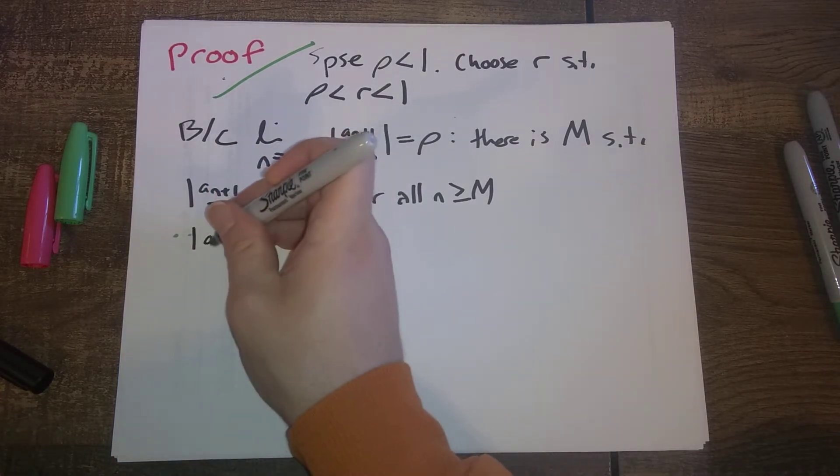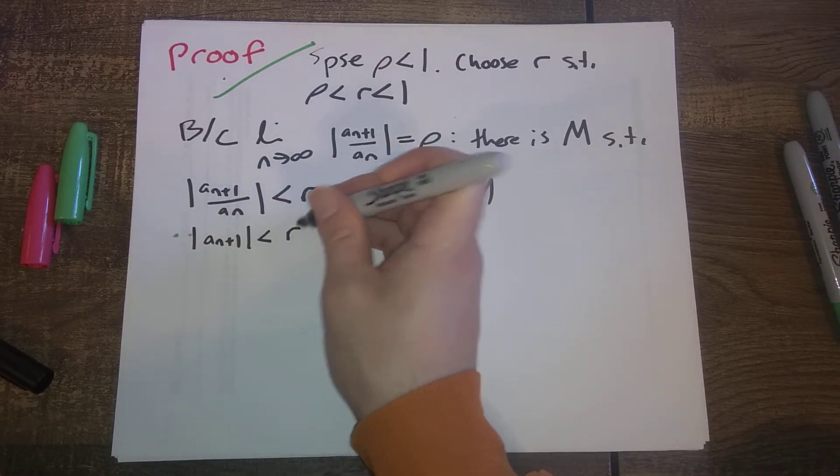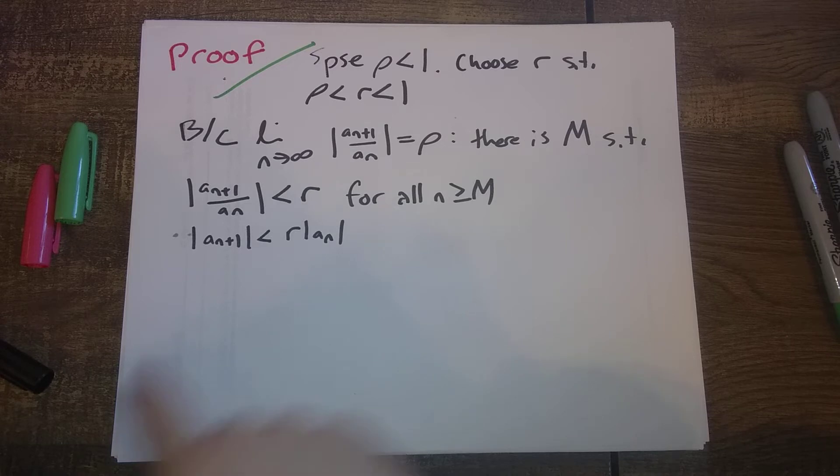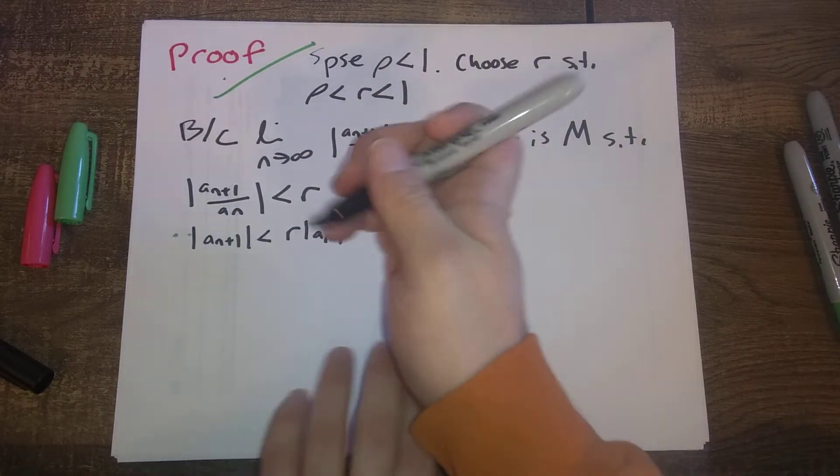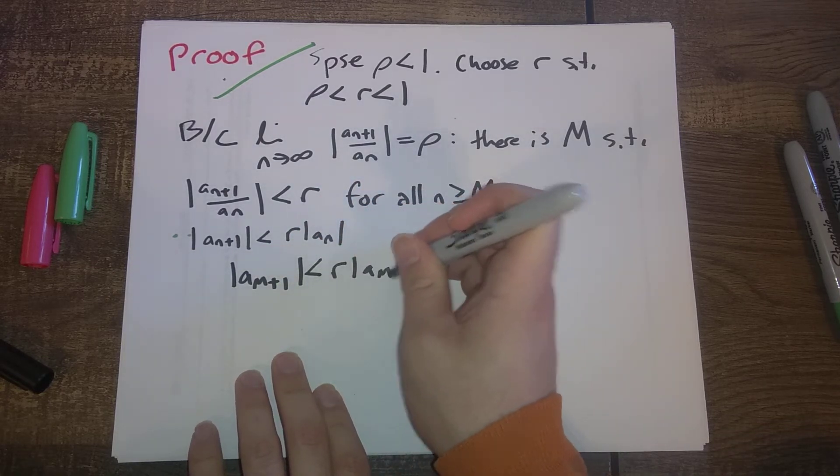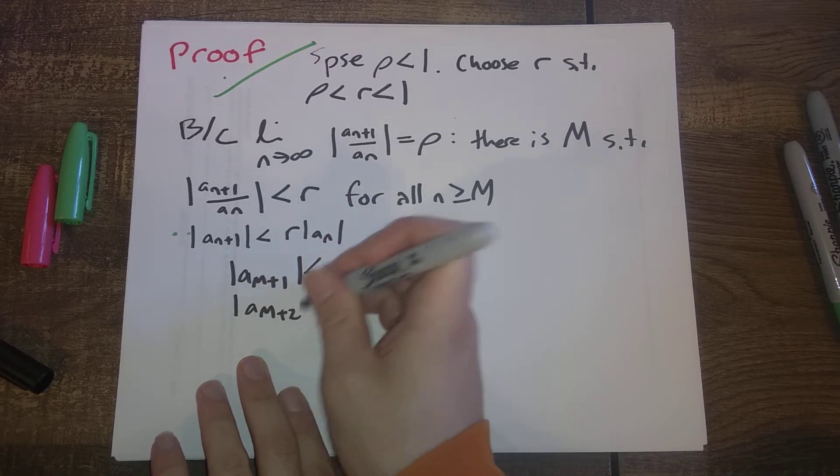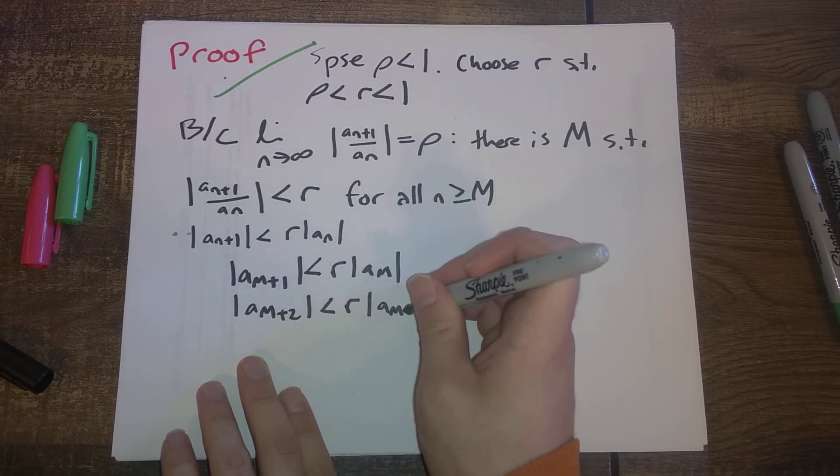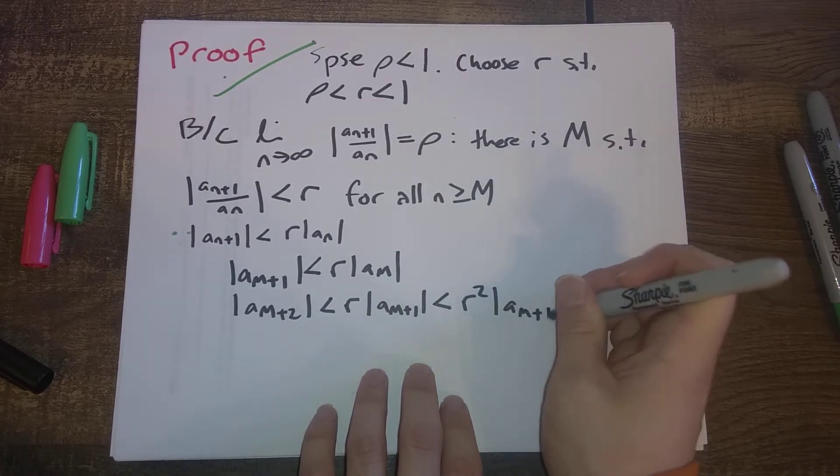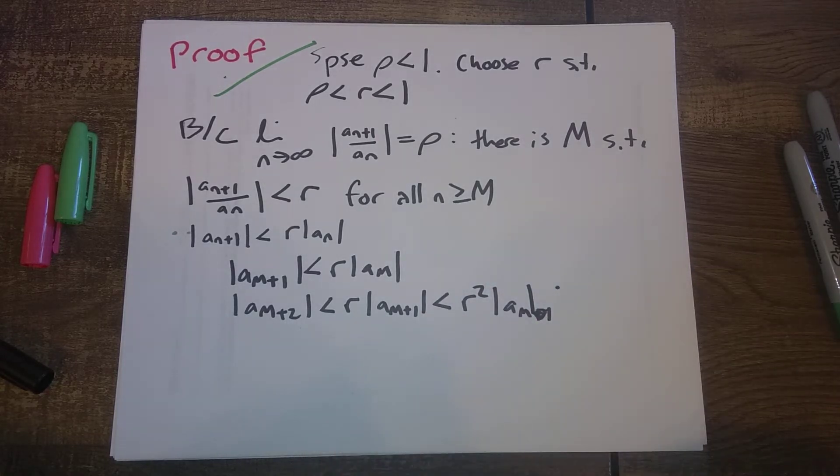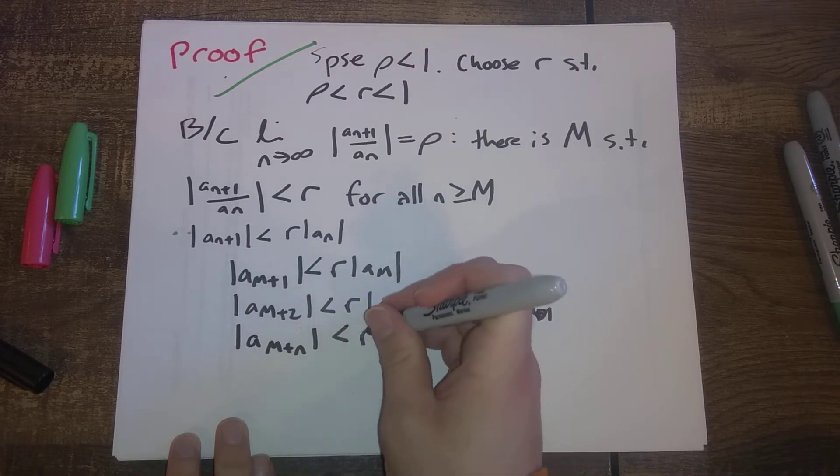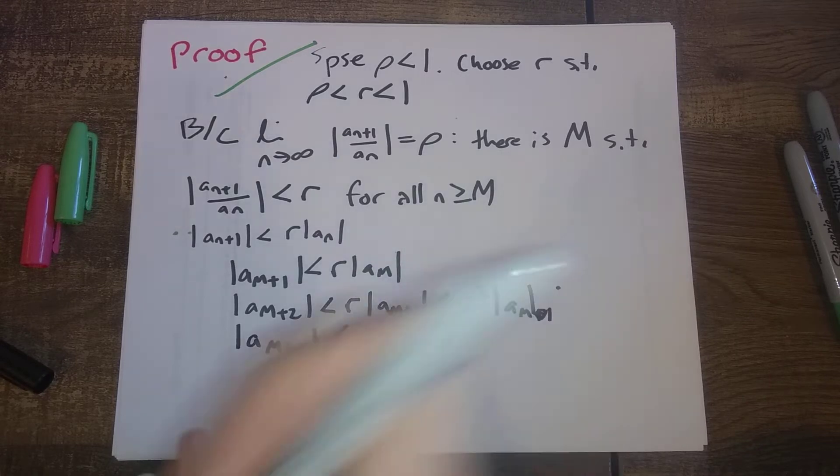Or rearranging this, a_{n+1} is less than R times a_n. I'm being a little bit lazy, I'm not saying the absolute values there, but I'm writing them. So if n is bigger than this cutoff value big M, well, a_{M+1} is less than R times a_M. a_{M+2} is less than R times a_{M+1}, but that's less than R squared times the absolute value of a_M. And so in general, a_{M+n} is less than R to the n times a_M.